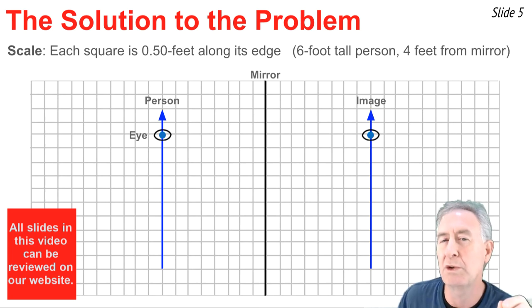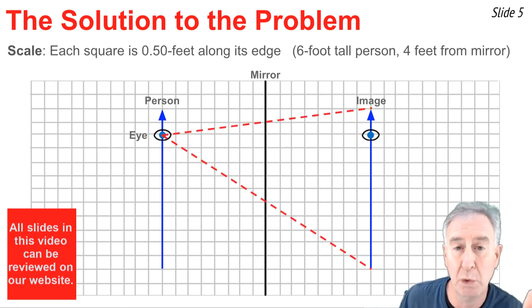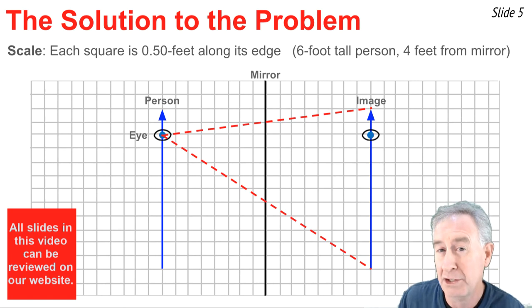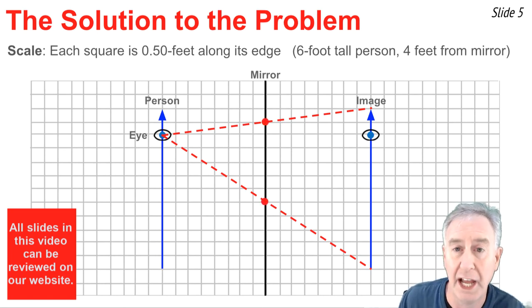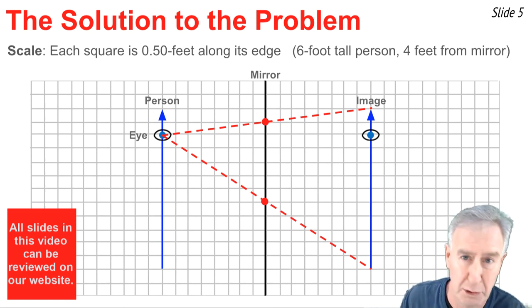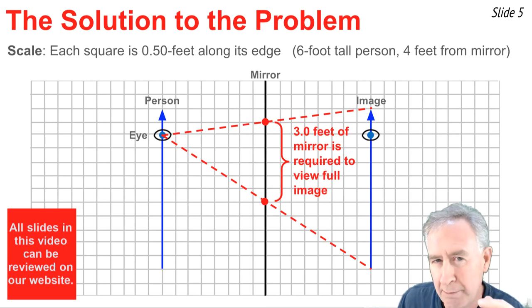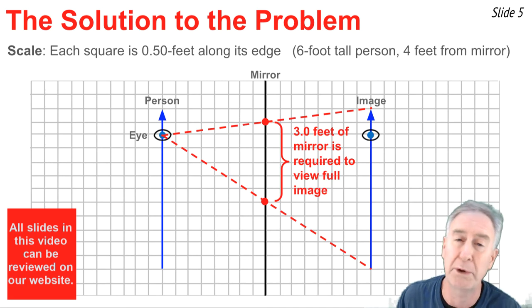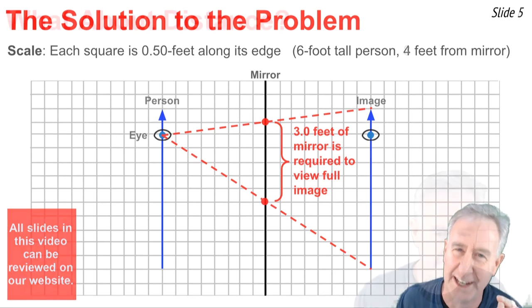Now we're going to do lines of sight from the person's eye to the top and to the bottom of the image. And then we'll look for where those lines of sight intersect the mirror. And that's how high and how low this person will have to look in order to view the image of him or herself. Now if I count the number of squares between the top dot and the bottom dot, it's six squares, meaning that this six-foot-tall person needs three feet of mirror to view the entire image. That's one-half of the person's height.